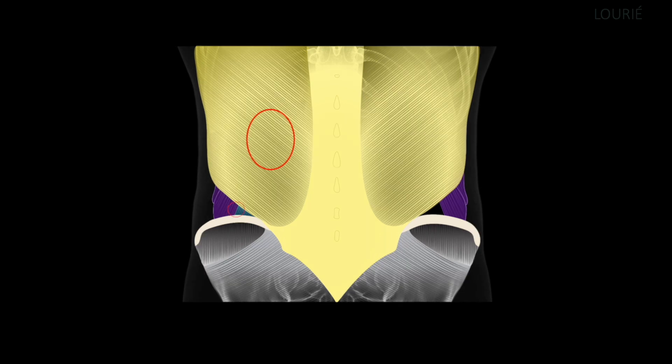Here you can see Petit's hernia, and on the patient's left side, you see the floor of Petit's hernia is the blue internal oblique.